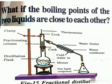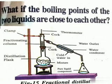What if the boiling points of the two liquids are close to each other? To separate two or more miscible liquids when the difference in their boiling points is less than 25°C, the fractional distillation process is used. If the difference in boiling points is greater than 25°C, simple distillation is used.